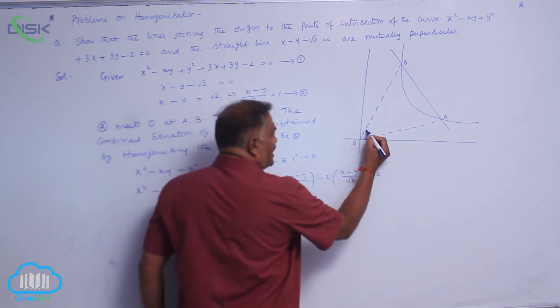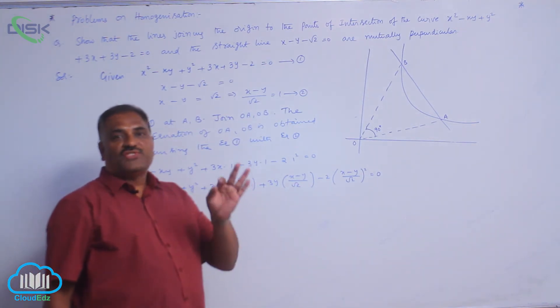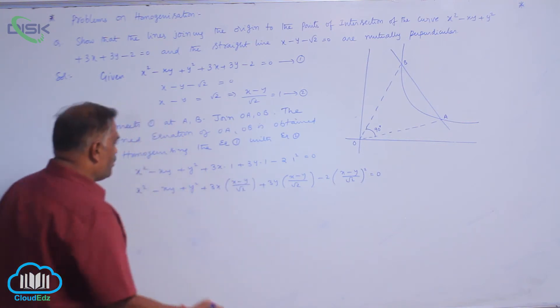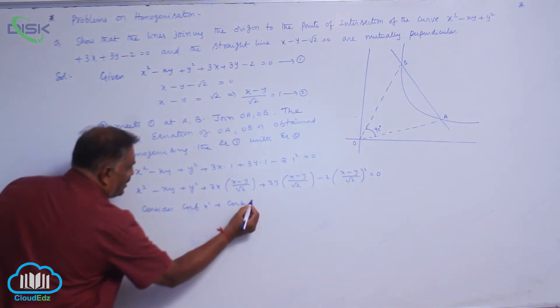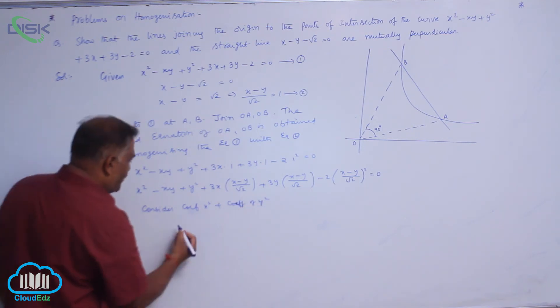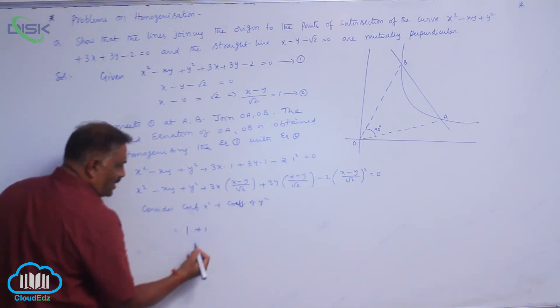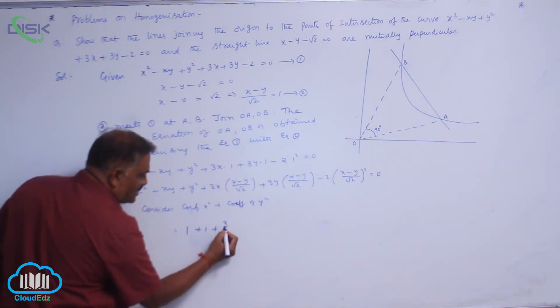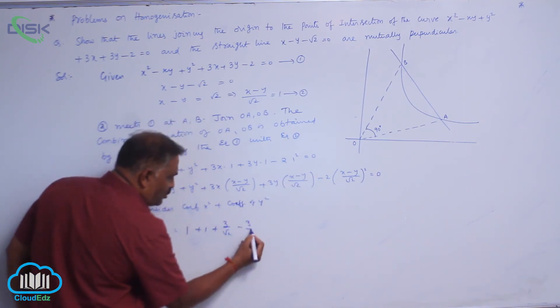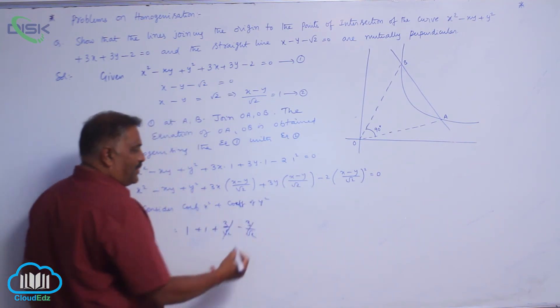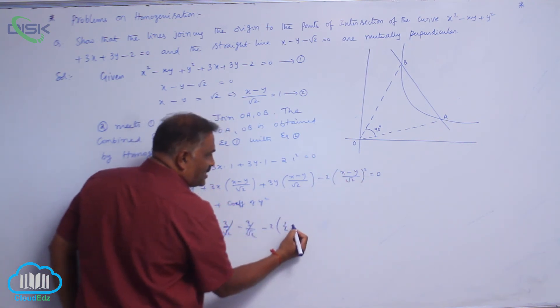What we need to prove? These two intersect lines are intersecting at an angle of 90 degrees. That means, we need to prove that coefficient of x² + y² = 0. Consider coefficient of x² plus coefficient of y². You can see first you take x², y² coefficient. Here x² is 1, here it is +1, x·x means x² plus 3/√2. Again xy term we do not want, -3/√2. You can cancel off these two immediately -2 into here x² coefficient is 1/2. This is again y² coefficient is 1/2.